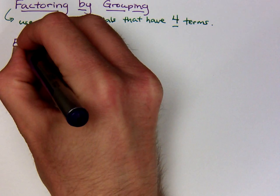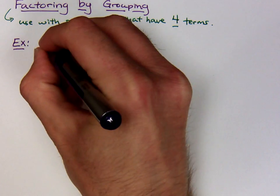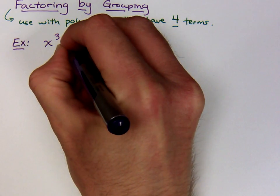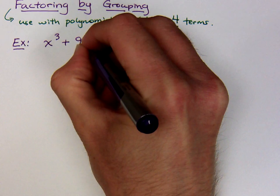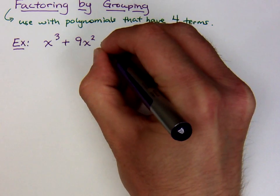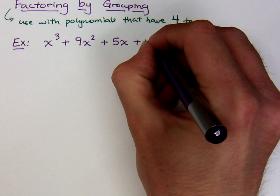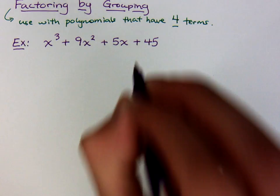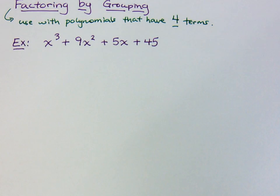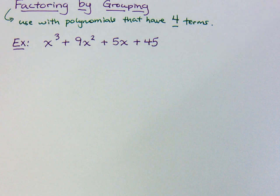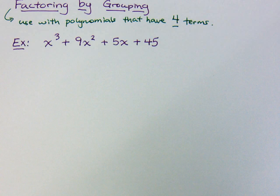Let me give you an example of what I mean by this. If I take x to the third plus 9x squared plus 5x plus 45. Now this could be a pretty ugly polynomial, and you're probably wondering how do I factor this? Traditional methods aren't going to really help you out here. There's no common factor to take out of everybody. So if you just leave it there, you're kind of stuck.